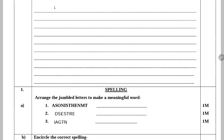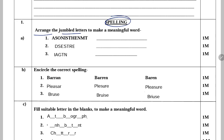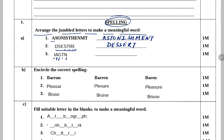Next competency is spelling. Arrange the jumble letters to make a meaningful word. A-S-O-N-I-S-T-H-E-N-M-T — this is 'astonishment'. Next: D-S-E-S-T-R-E — this is 'desert'. Next: I-A-G-T-N — 'giant'. Yeh words 'Travel' se hain — giant, desert, astonishment. Next: Encircle the correct spelling — baron, pleasure, bruise.